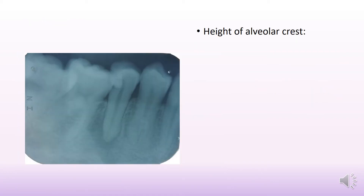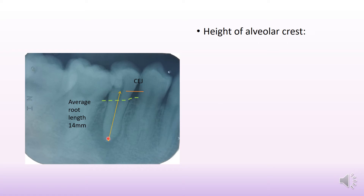Moving on to the height of the alveolar crest: since our tooth of interest is 45, we revolve around 45. The green line indicates the height of alveolar crest, and the orange line indicates the CEJ. Given that an average root length of a first mandibular premolar is around 14 mm, the loss of bone is about 3 mm, and hence the height of alveolar crest is around 3 mm below the CEJ for the tooth of interest.